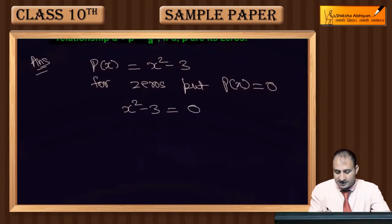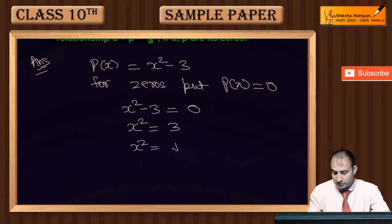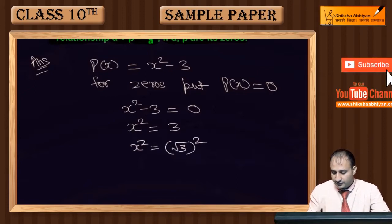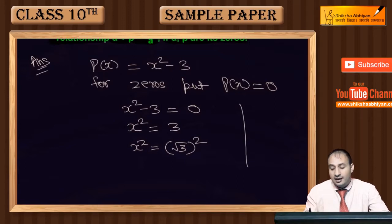From here, we can write x² = (√3)². Now when you have this type of condition where a² = b²...